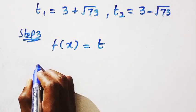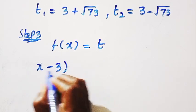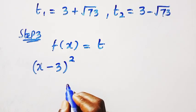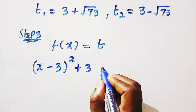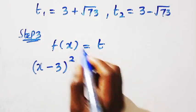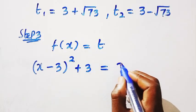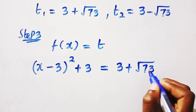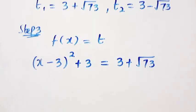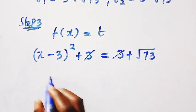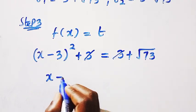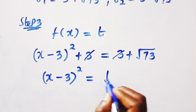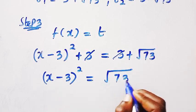This is for f of x, then plus 3 equals, while the first t here is 3 plus the square root of 73. And then, 3 cancel 3, here is x minus 3 squared equals the square root of 73.